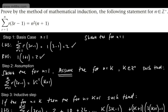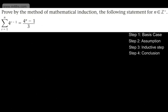Let's have a go at another one. Prove by the method of mathematical induction the following statement for n, where n is a positive integer: the sum from r equals 1 to n of 4 to the power of r minus 1 is equal to (4 to the power of n minus 1) over 3.